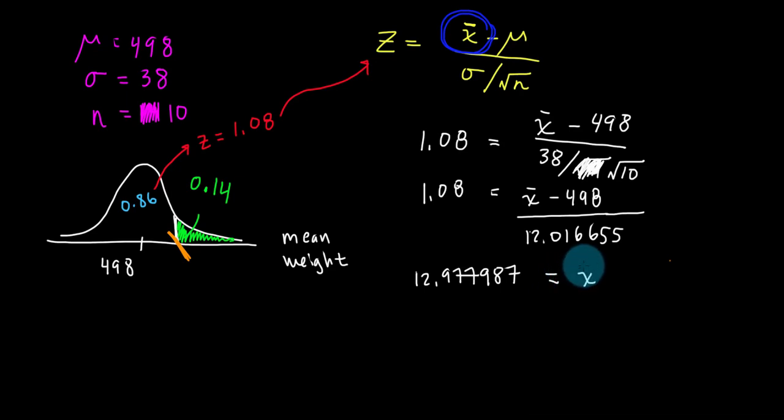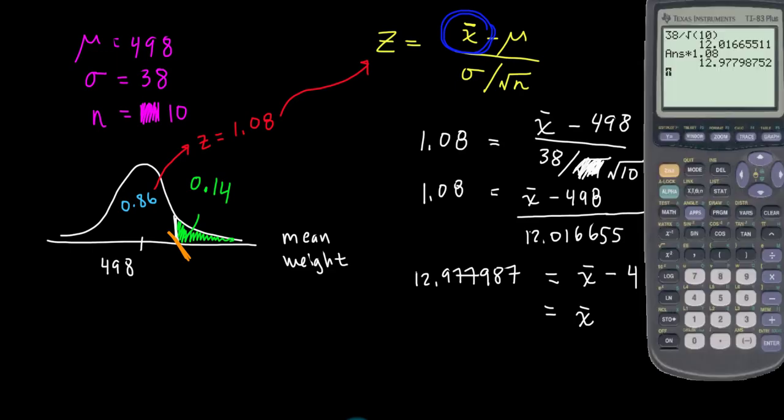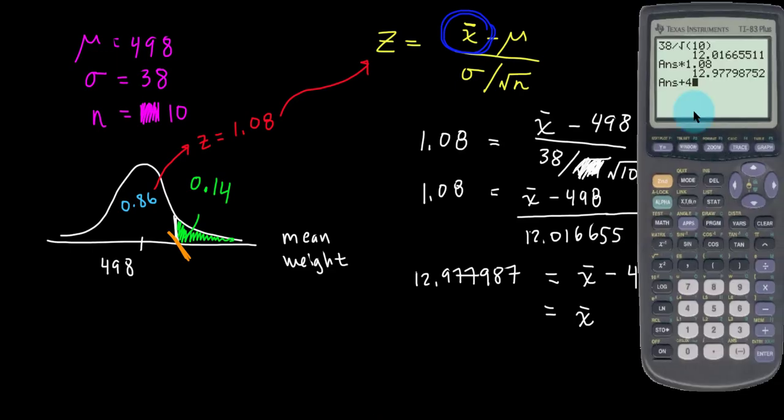That's on the left side. And on the right side, I've got x-bar minus 498. So we're only one step away to solve for x-bar. I just need to add 498 to both sides to get us 510.98 about.